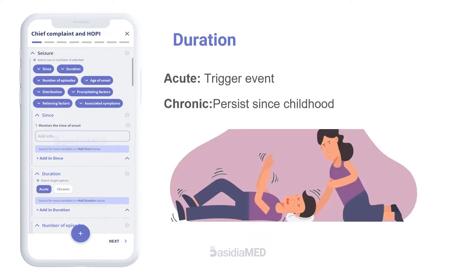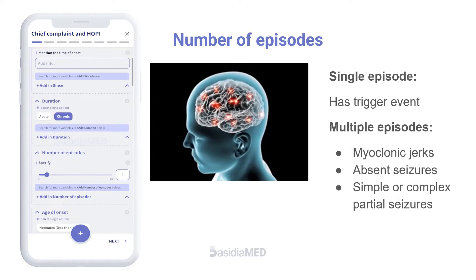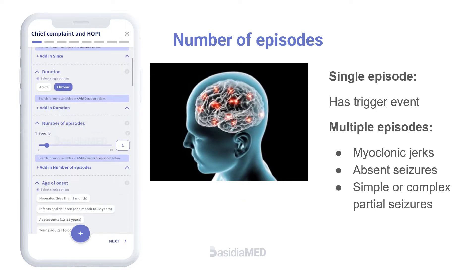Acute onset seizures are usually provoked by a trigger prior to each episode. Patients with unprovoked seizures usually suffer from chronic seizures persisting since childhood. Such patients must be asked for a family history of the disease. Most people with epilepsy are diagnosed after a major seizure but often have had preceding minor events.